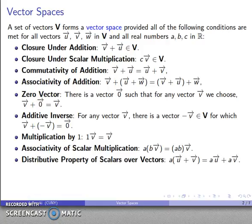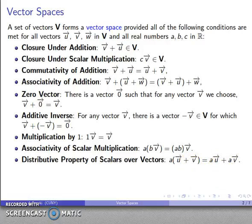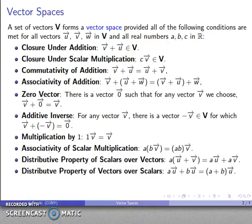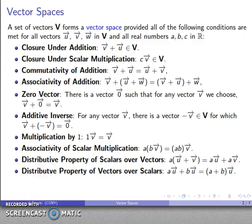Then I want two forms of the distributive property. One is the distributive property of scalars over vectors: a scalar multiple A over U plus V should equal A times U plus A times V. The other is the distributive property of vectors over scalars: if two different scalars are being multiplied by the same vector, I want to be able to combine those two scalars into a single product. So those are my ten requirements for what makes a vector space, and if I fail any one of them, it's not a vector space.